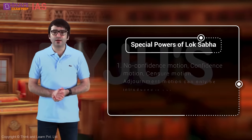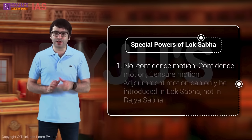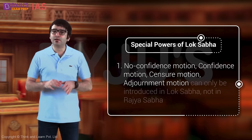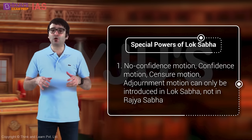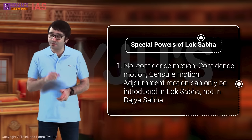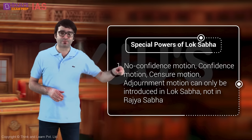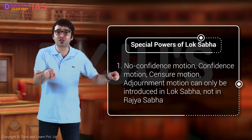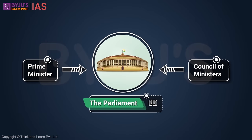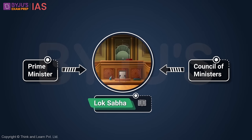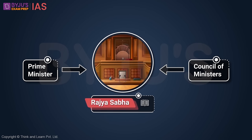Special powers of Lok Sabha: no confidence motion, confidence motion, censure motion, and adjournment motion can be introduced only in Lok Sabha, not in Rajya Sabha. This is because in a parliamentary form of democracy, the Prime Minister and the Council of Ministers are responsible to Lok Sabha. These motions are tools for ensuring the accountability of the government to Lok Sabha, which is why they can only be introduced there.